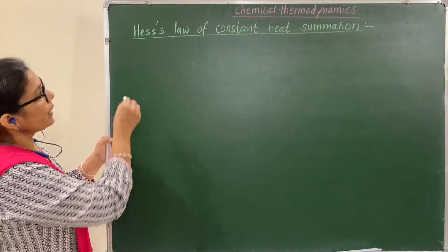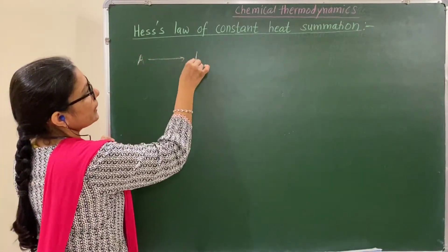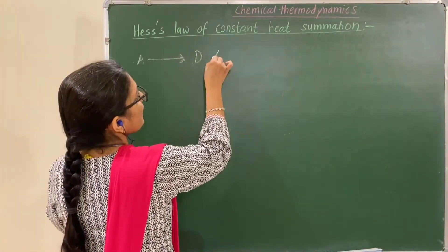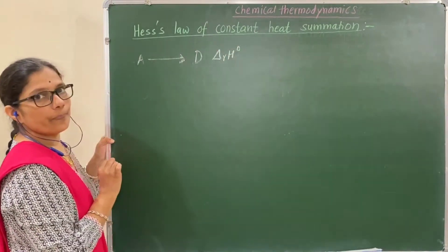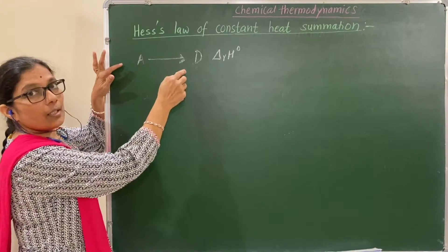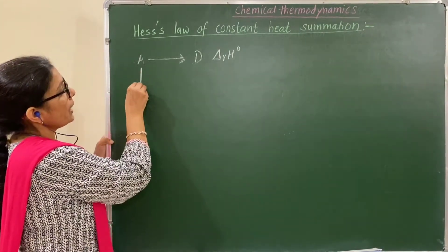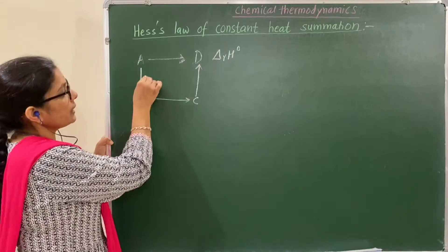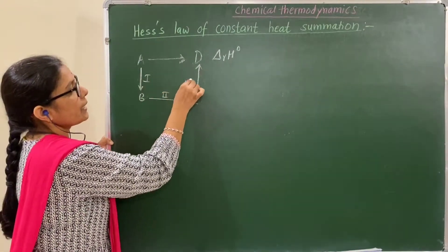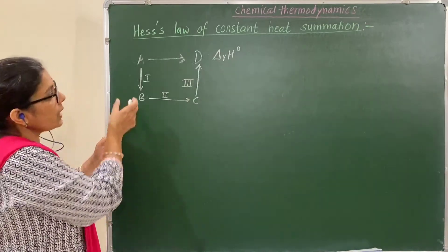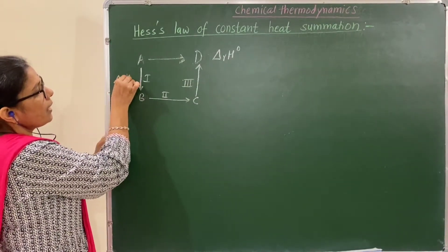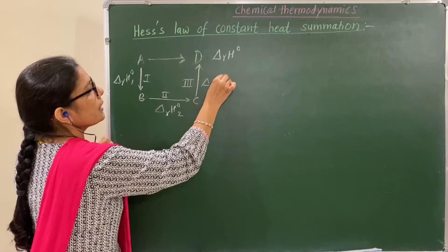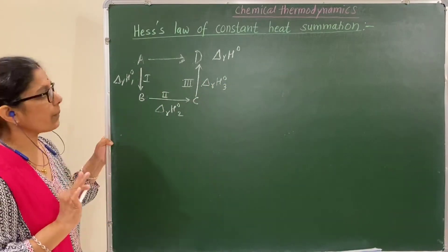Consider one reaction where A is converted into D in a single step, and the change in enthalpy for this reaction is delta H. Now, if the same reaction is carried out in more than one step — A converts to B, then B converts to C, then C converts to D — the enthalpy changes for those steps are delta H1, delta H2, and delta H3 respectively.